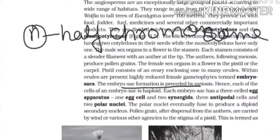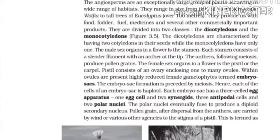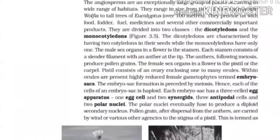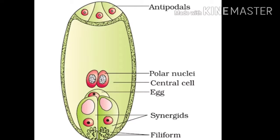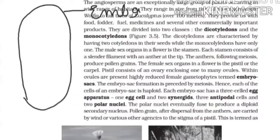The embryo sac formation is preceded by meiosis, a reductional division. That is why the gametes are always haploid in nature — they only have half the number of chromosomes. Each embryo sac has a three-cell egg apparatus. This is the diagram of the embryo sac — this is an enlarged view of the embryo sac.